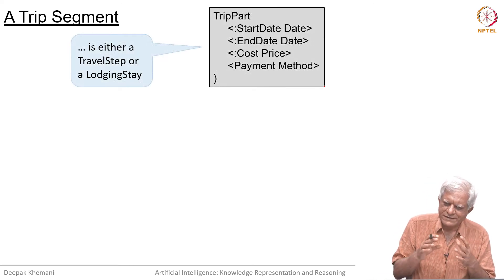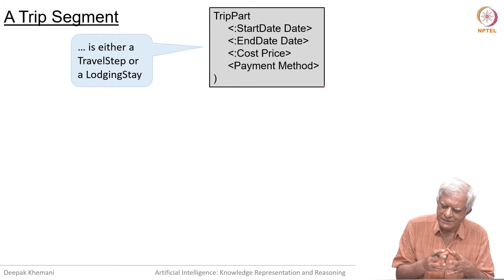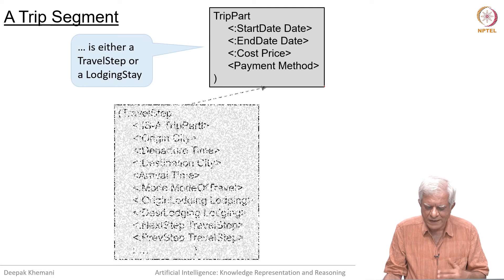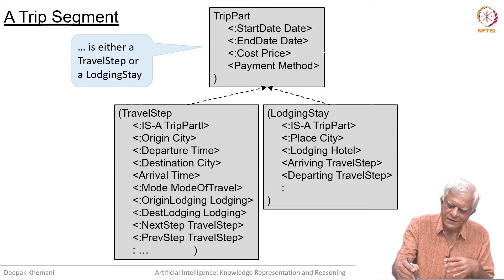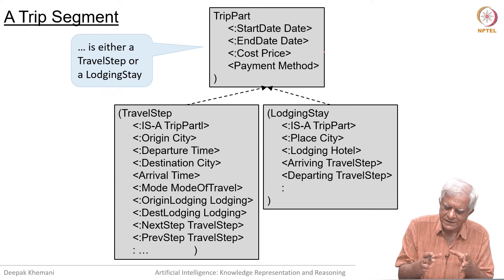A trip part can be a very generic idea — as you can see it is a generic frame here which has a start date, end date, a cost associated with it, and a payment method associated with it, and so on. Trip parts can in general be of two types: one is the travel part and one is the lodging part. Whatever is common is stored in the super class, and whatever is specific to the two kinds of frames — travel and stay — will be stored in the individual parts.